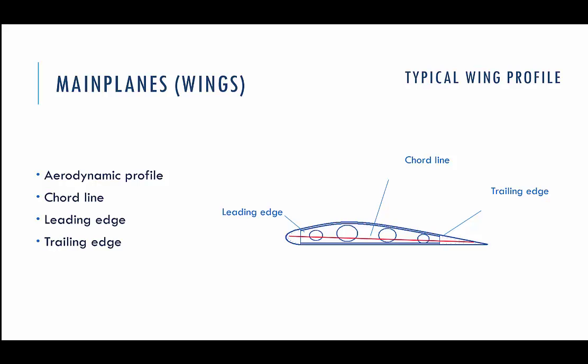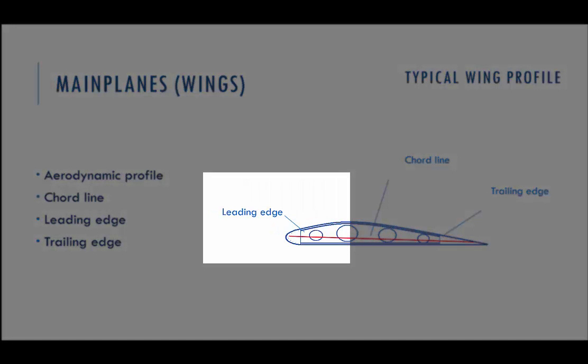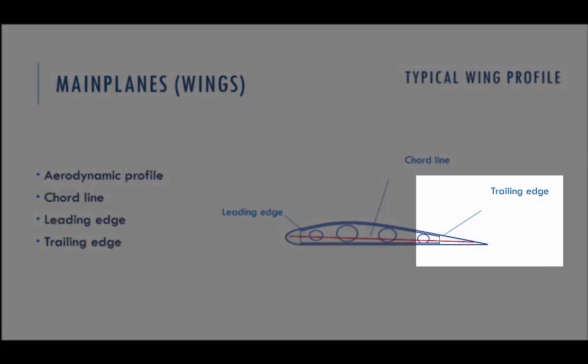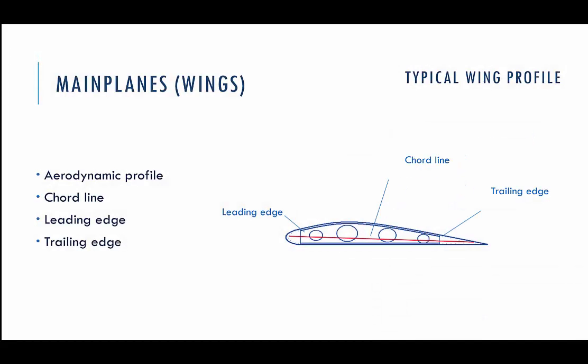Just want to mention that for wings there are some common definitions. Leading edge is the front part of the wing. Trailing edge is the aft part of the wing. And the chord line is an imaginary line of the wing laid between the most remote points of the leading edge and trailing edge. We use the chord line to measure the angle of attack, for example, or to apply vectors of aerodynamic forces.